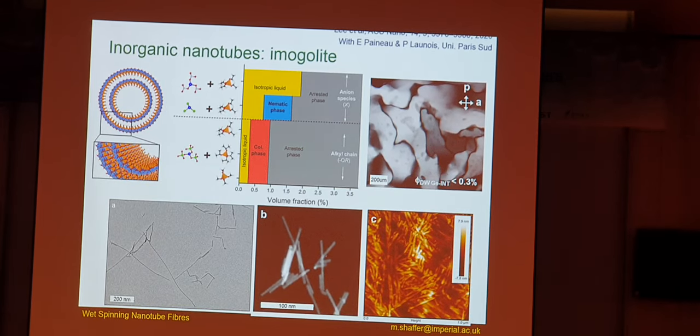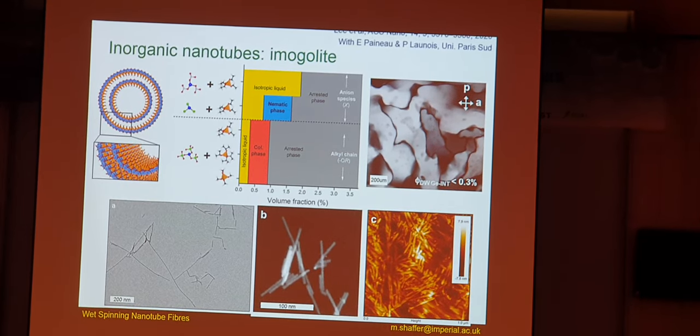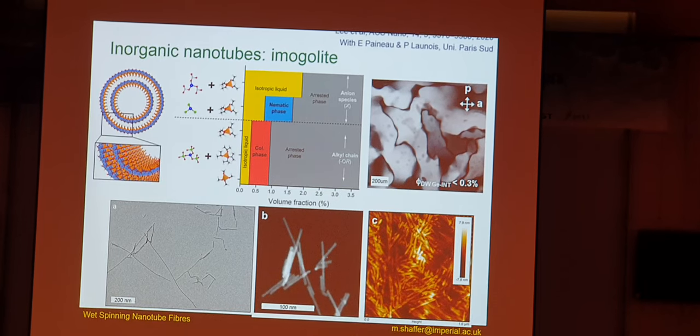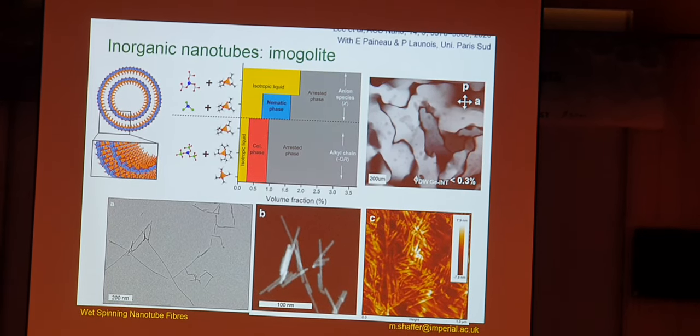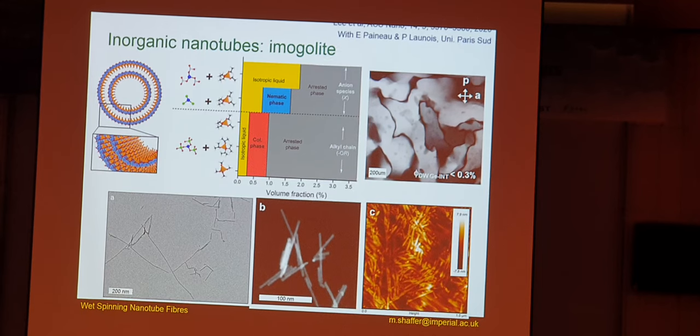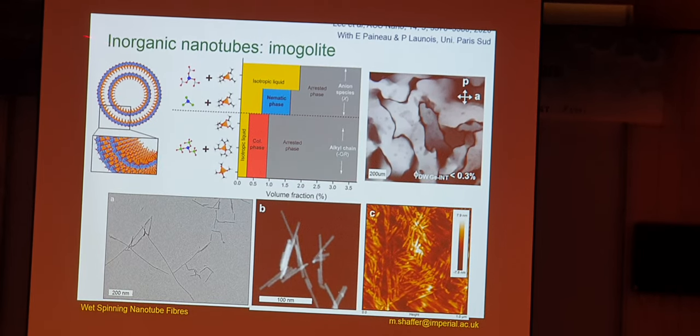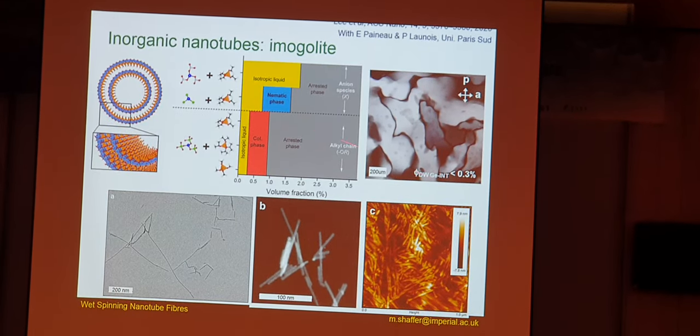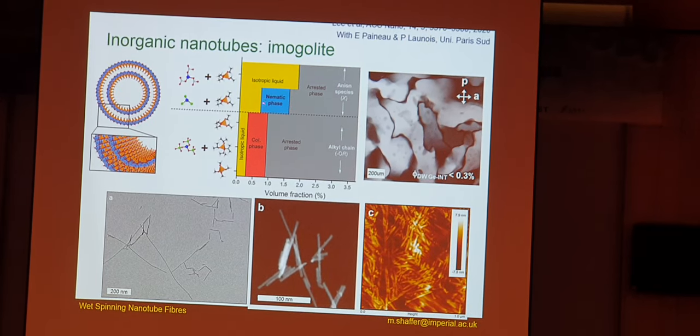Now we'll move to the other system, which is the imogolite system. This is an inorganic nanotube, based around an aluminosilicate, and the structure is shown here. You might just about make out the different polyhedra that make up the wall. On the inside is silicon, and then in blue is the octahedron of the aluminum. You can see this as a double-walled example, although single-walled nanotubes are also known. The diameter here is about two nanometers for the inner one, and the length is maybe hundreds of nanometers to microns. These have a positive surface charge from hydroxyl groups, and they are quite soluble in water, and in water they make nice nematic phases, or in fact a range of mesophases, but we're particularly interested in their nematic ratio, which is where we'll be using them.